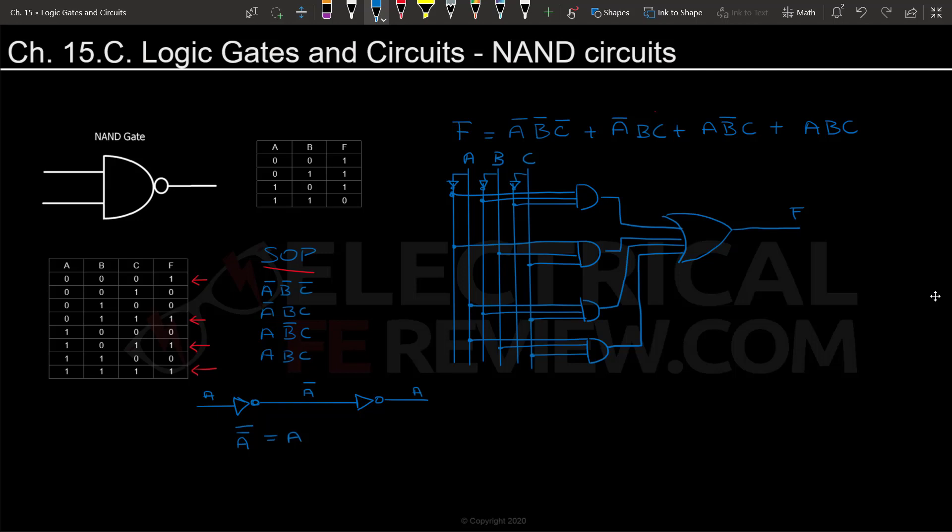We're going to use this property and DeMorgan's property that an OR of inverted inputs equals a NAND of regular inputs. We'll use these two properties to make this circuit only use NAND gates. The first thing we want to do is invert all these AND terms—we're going to invert the output by putting a little circle to symbolize the inversion so all of these become NANDs.